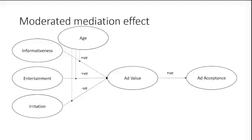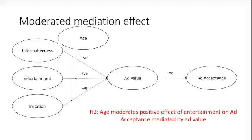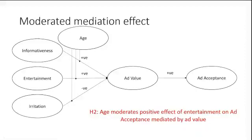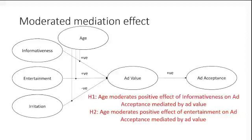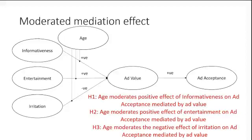When we have a moderated mediation effect — where you have a mediated path that is moderated by another variable — the hypothesis is a little different. For example: age moderates the positive effect of entertainment on ad acceptance mediated by ad value. We have all three variables: the moderator moderates the positive effect of entertainment on ad acceptance, which is mediated by ad value. You can write this hypothesis in whatever manner you like, but this is one way. Similarly, this applies for informativeness and for the irritation effect.